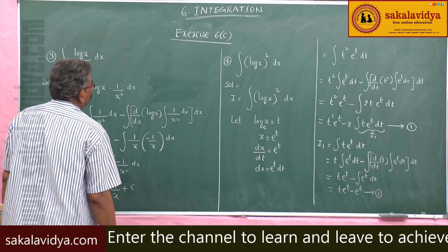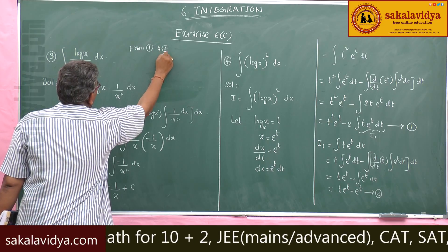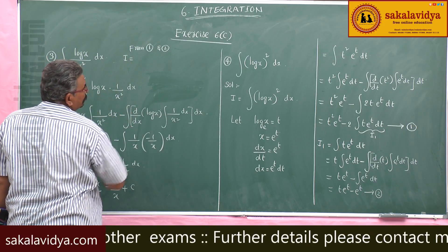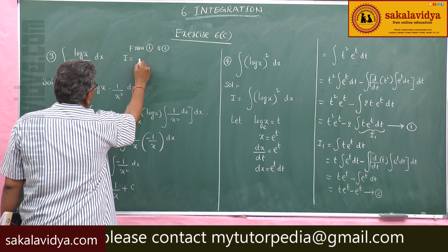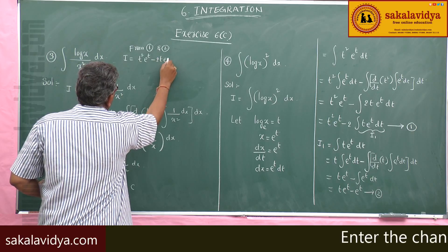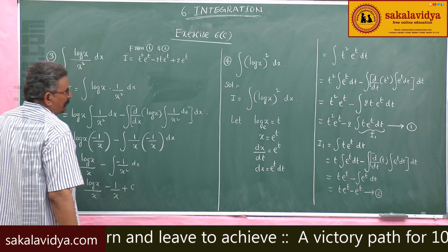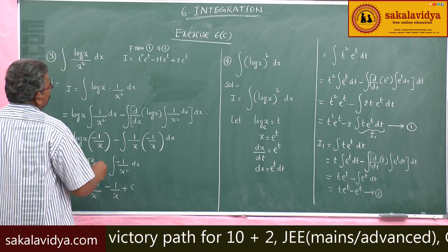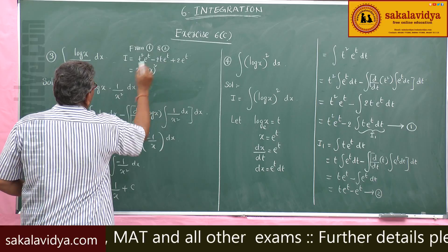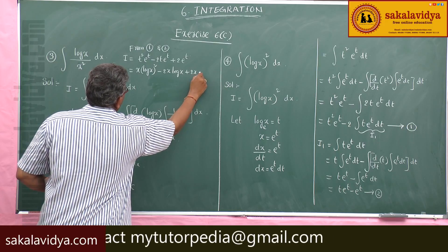Combining equations 1 and 2: I = t²·eᵗ minus 2(t·eᵗ minus eᵗ) = t²·eᵗ minus 2t·eᵗ plus 2eᵗ. Substituting back where eᵗ = x and t = log x, the final answer is x(log x)² minus 2x·log x plus 2x plus constant of integration.